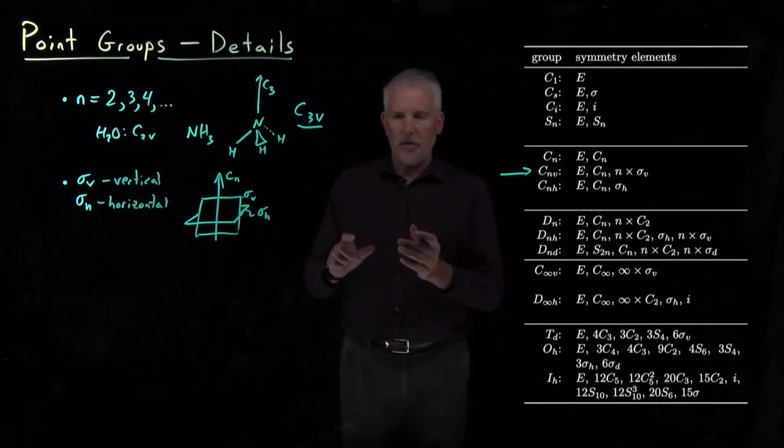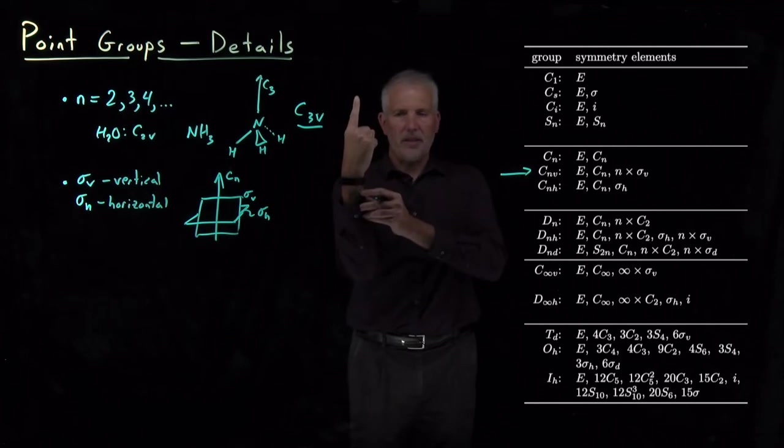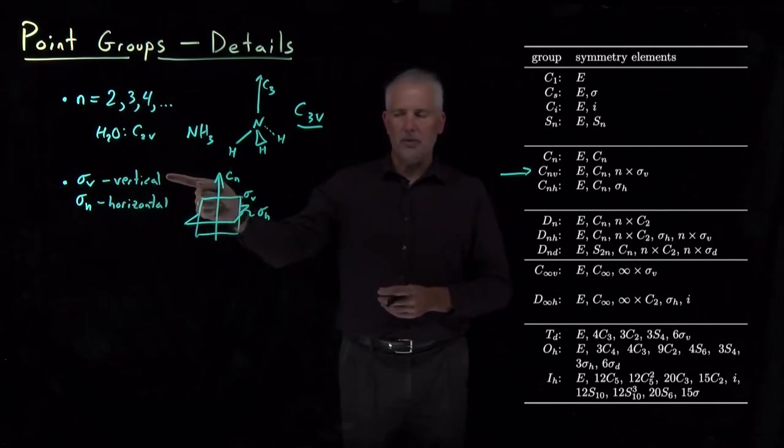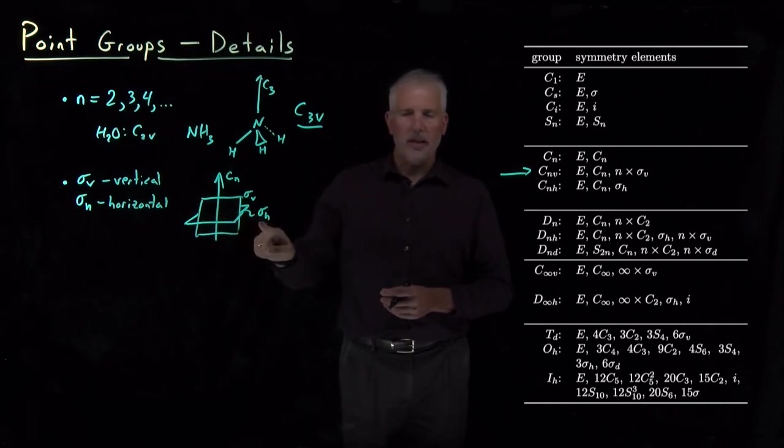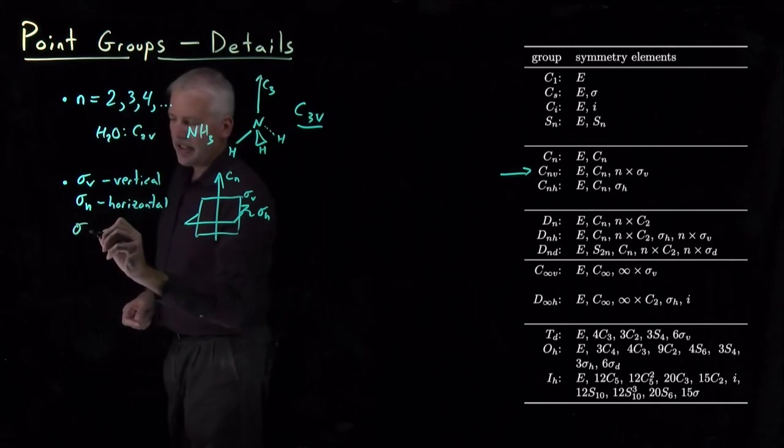If I've drawn the molecule in some odd orientation where the C2 axis points in a weird direction, I have to make the C2 axis point straight up, and then if the plane is vertical, I call it a vertical reflection plane. If the plane is horizontal, then I call it a horizontal reflection plane. A sigma D is new.